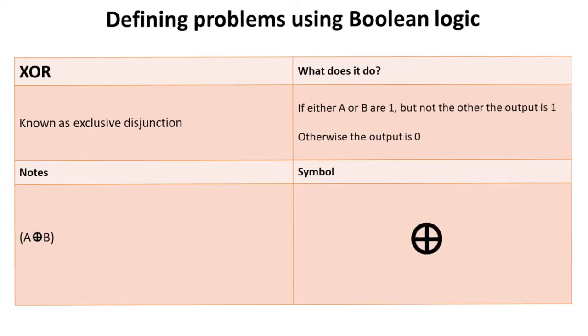There's a slightly different version of OR called exclusive OR, XOR. This is known as exclusive disjunction. In this case, if either A or B are 1, but not the other, the output is 1. This is subtly different to OR.